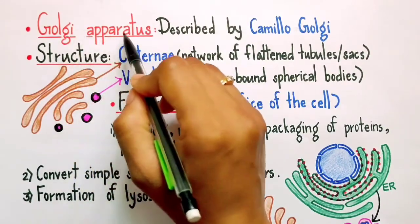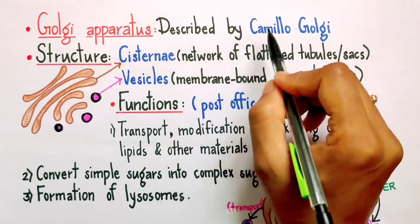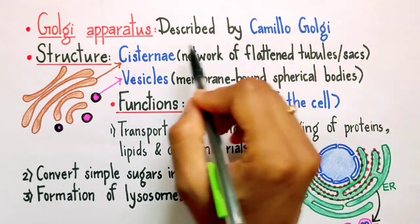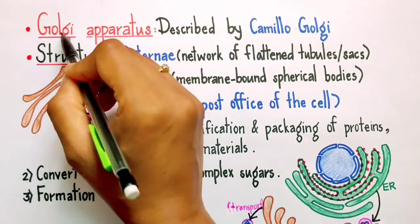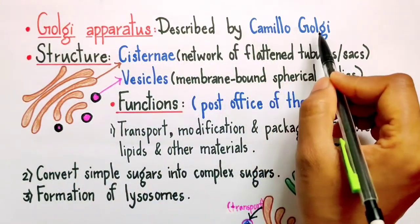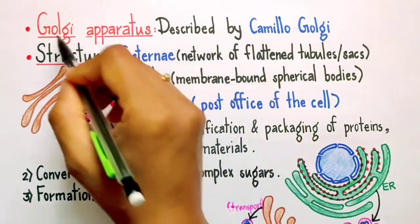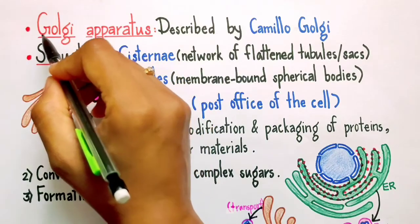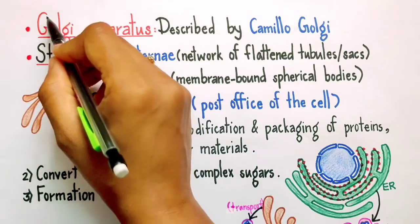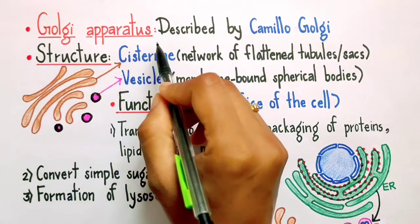Golgi apparatus were described for the first time by Camilo Golgi. If you observe carefully, the term Golgi of Golgi apparatus comes from the name of this person. So remember, whenever you are writing this term Golgi, to use capital letter for this G, even if it is in the middle of the sentence.